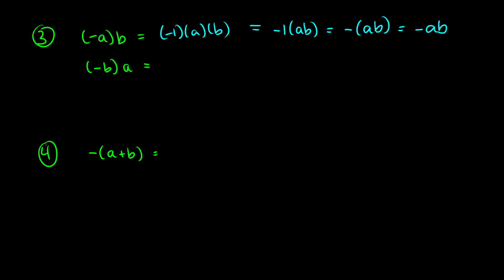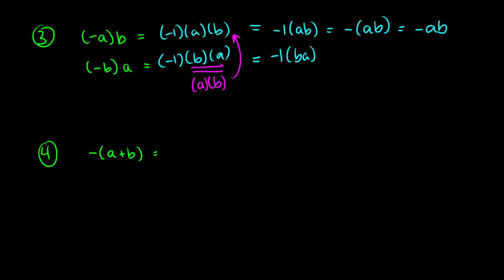Now what if we do negative b times a? This is really the same thing — negative 1 times b times a — but based on commutativity from the properties of real numbers, we know this is the same as a times b. So this is the same as negative 1 times b times a, which is negative ba, giving exactly the same result. Whether you have negative a times b or negative b times a, it's the same result.